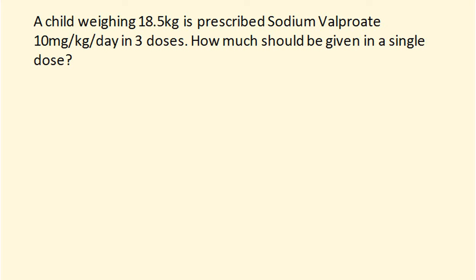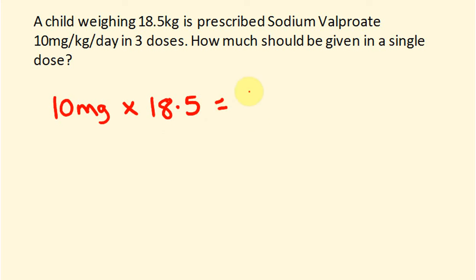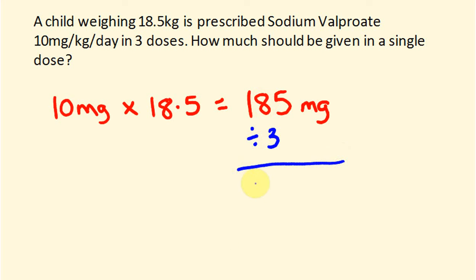How much should be given in a single dose? First we work out how much this kid should get for the day. They're getting 10 milligrams for every kilogram and they have 18.5 kilograms, so all up this kid is getting 185 milligrams of sodium valproate. We're splitting this over 3 dosages, so we divide our answer by 3. This is already split into the number of dosages, so we're just dividing by 3. 185 divided by 3 is 61.67 milligrams.